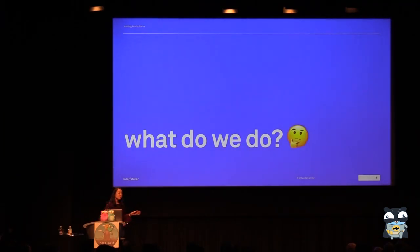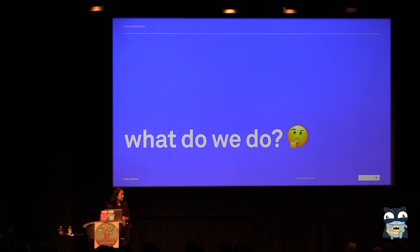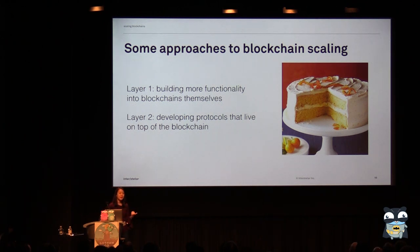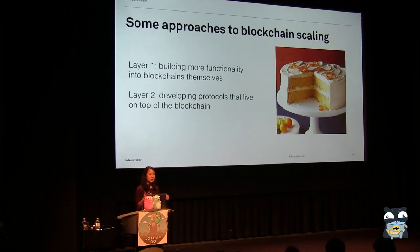That might seem a little bit bleak — you might think blockchains are over and we can all go home. But the question is, what do we do about this? There are two philosophies of blockchain scaling. Layer one is about making changes to the on-chain representation itself, so building more functionality into blockchains that can get those confirmation times down from 10 minutes to a number of seconds.